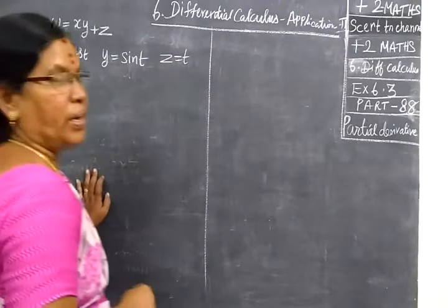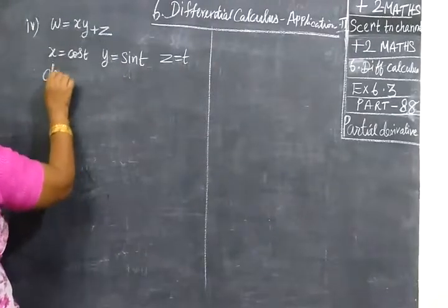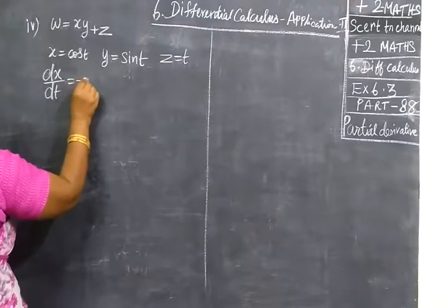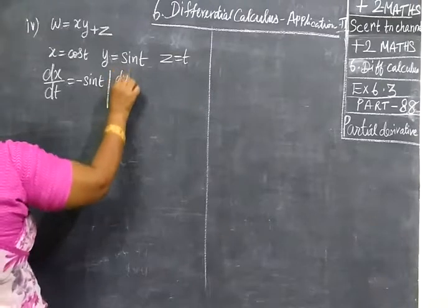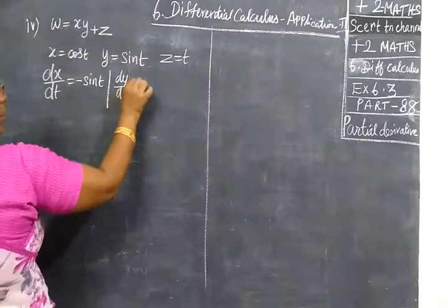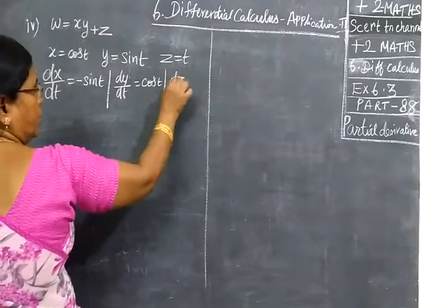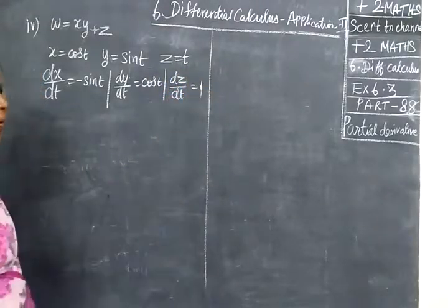Now, we see for the partial derivatives. First, we are finding dx by dt. Cos t derivative is minus sin t. Next, we find dy by dt. Sin t derivative is cos t. Then, dz by dt. T differentiation is 1.